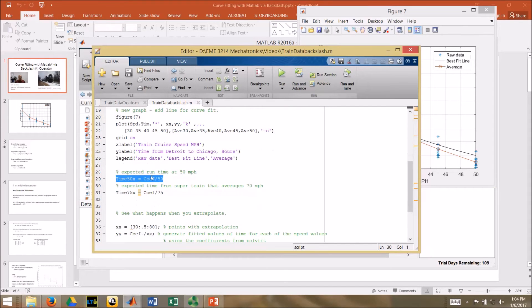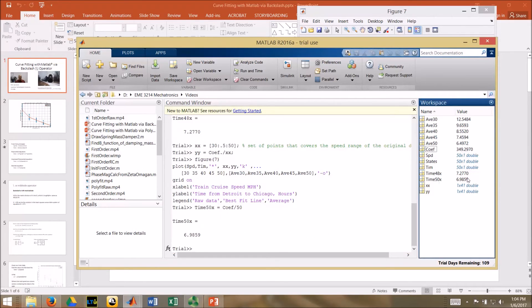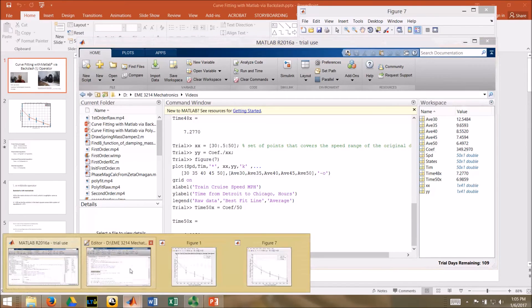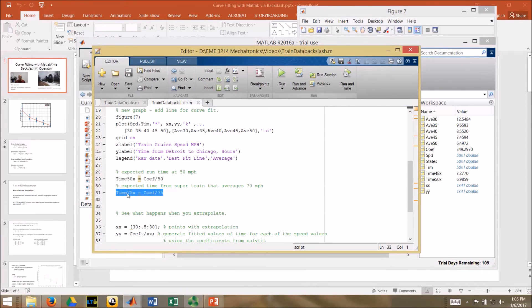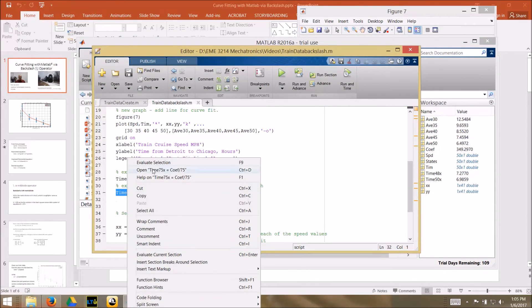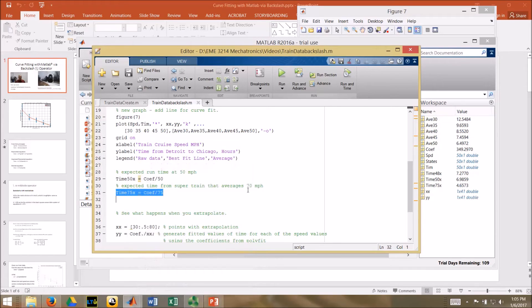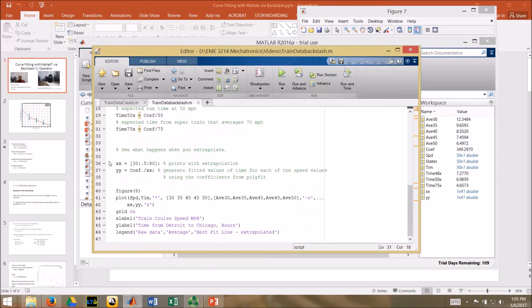Again I can calculate the average time at 50 which is 6.98 hours. I know I'm going kind of fast but we've done this a couple times already. I can extrapolate - still risky - I'm extrapolating out to 70, out to 75 miles an hour and I get 4.6.